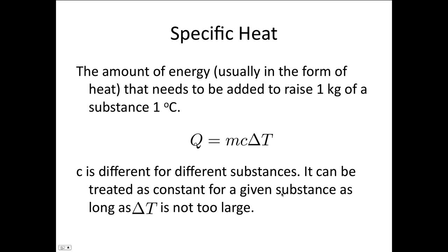OK, so on to specific heats. We've seen before that specific heat is the amount of energy, usually in the form of heat, that needs to be added to raise one kilogram of a substance one degree C. So Q is equal to mc delta T is the form it's normally written in. C is different for different substances, and it can be treated as a constant for a given substance, as long as the change in temperature isn't too large.